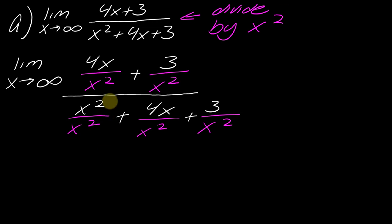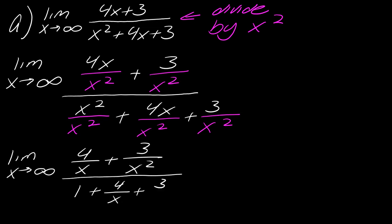As you can see, I went through every single term and divided each part by x squared. Now you want to reduce where you can — for example, x over x squared simplifies. You might want to pause the video here, do that on your own, and hit play when you're ready. One important thing: notice I'm keeping the limit notation on the left. We haven't taken the limit yet, so you have to include that notation — it's something a lot of teachers will take points off for.